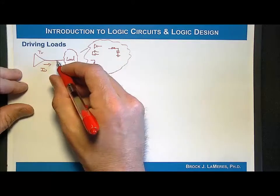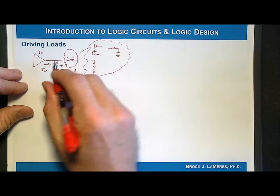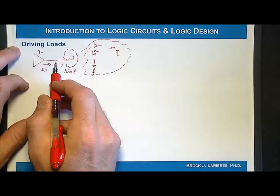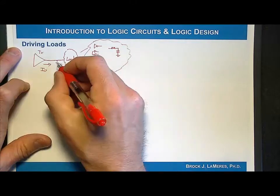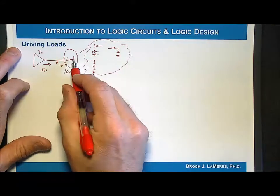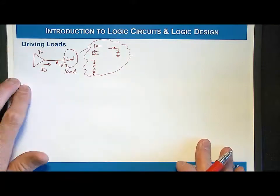The worst case situation is you just take this and short it to ground. That will take essentially an infinite amount of current. This transmitter will just smoke, and you're done. So we've got to make sure that when we connect the load, we know how much current it's going to drive, and then we need to compare that to the specifications of the transmitter.